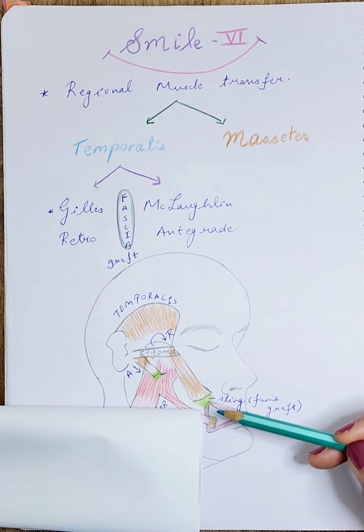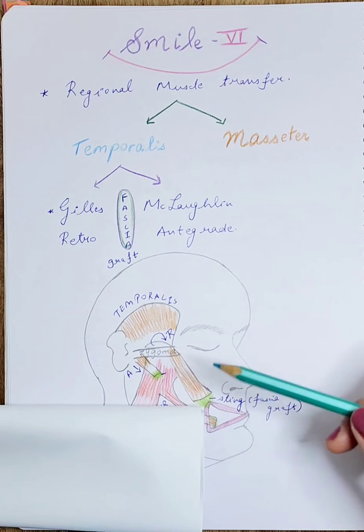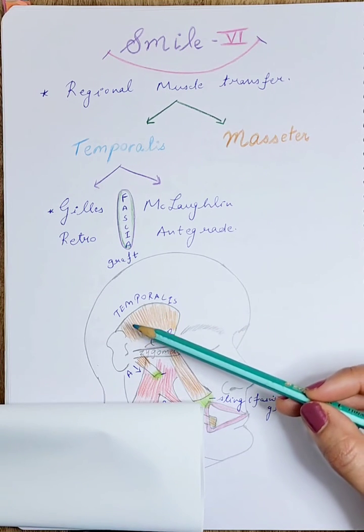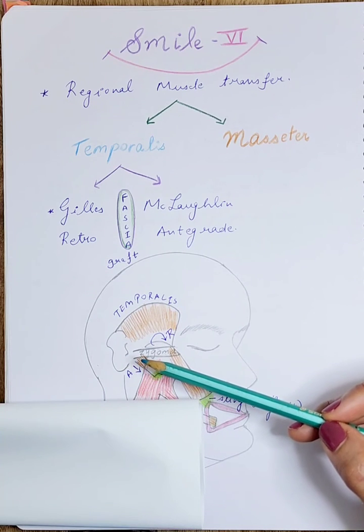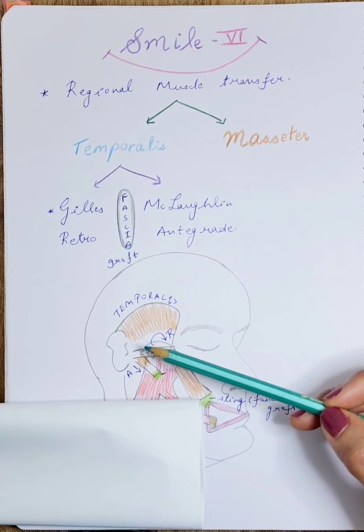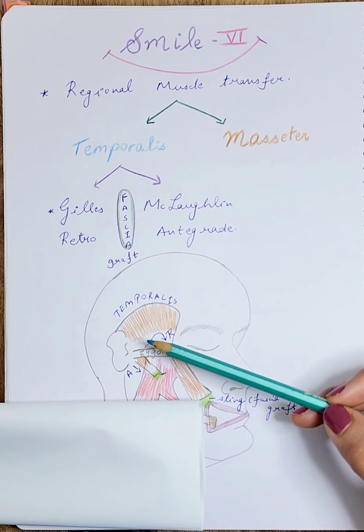Obviously, there are drawbacks. There is hollowness felt at the donor site in the temporal region. Because this is a muscle of mastication, a chewing muscle, it creates some unnatural movements when the smile is initiated.